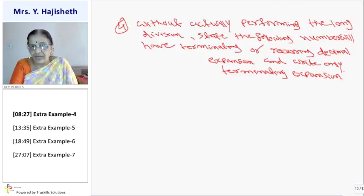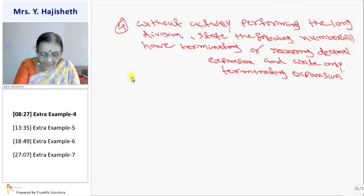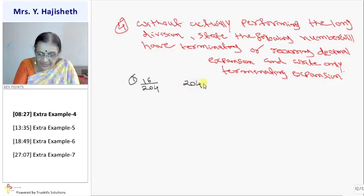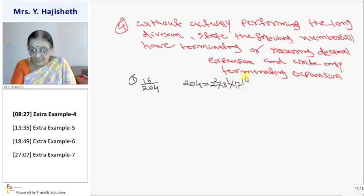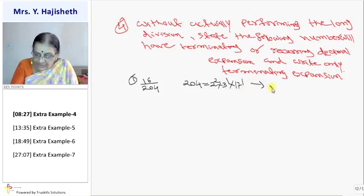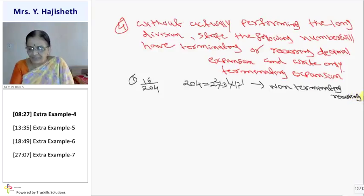Now, first sum is 16 by 204. 204 can be expressed as 2 raised to 2, into 3 raised to 1, into 17 raised to 1. So here 17 is one of the factors, 3 is another factor. So it is non-terminating recurring. It is non-terminating recurring. So we don't have to write its expansion.